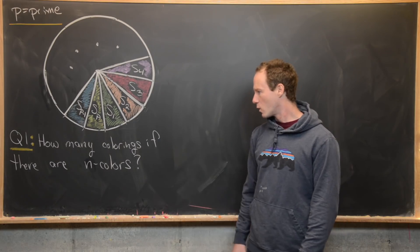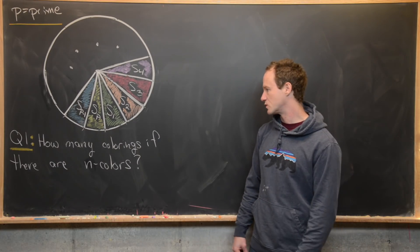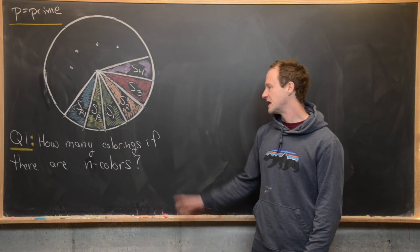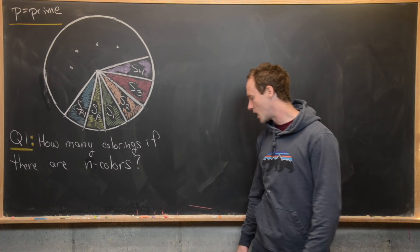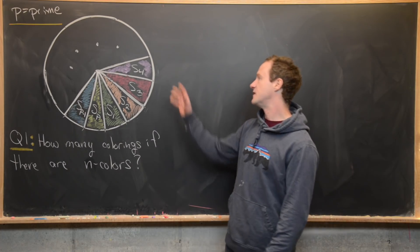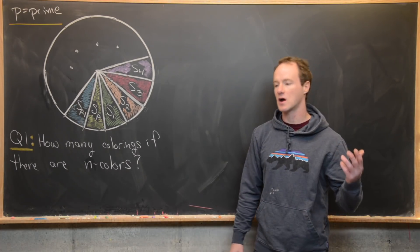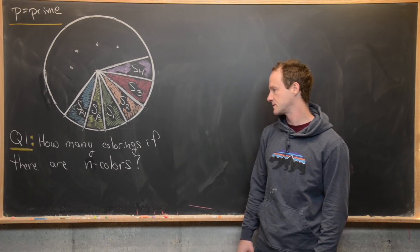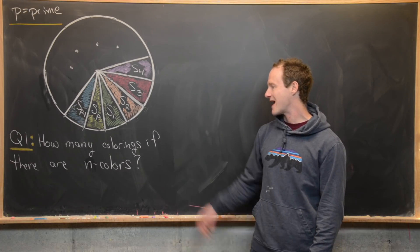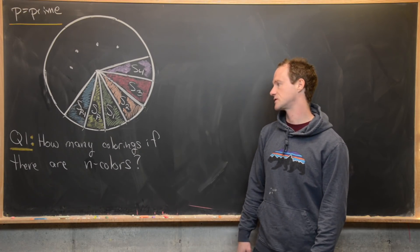Our warmup question, which I'm calling question one, is: how many different ways can we color this circle if we color all of the sectors and we have n total colors?